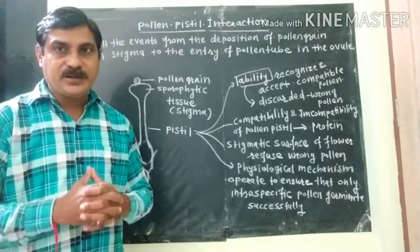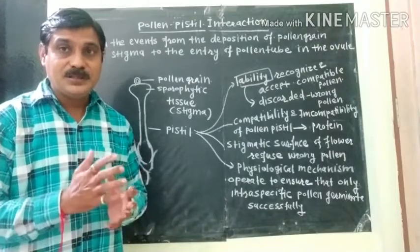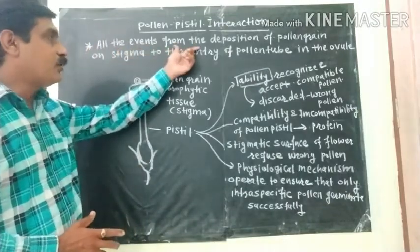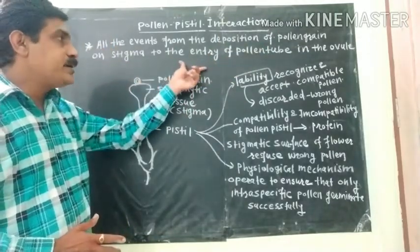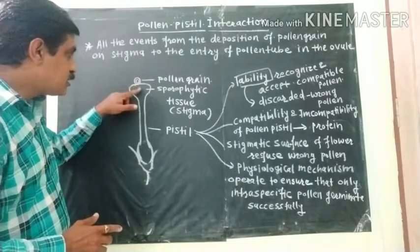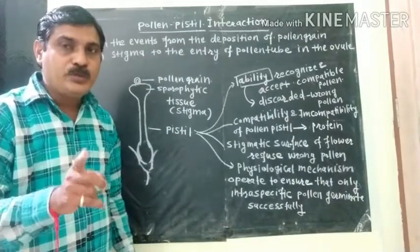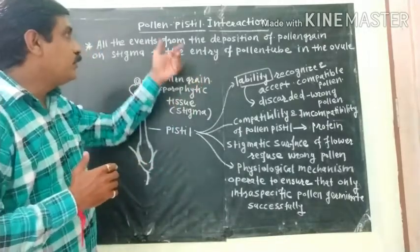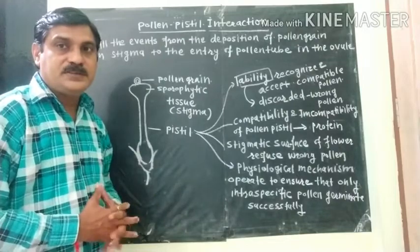This interaction begins with pollination and ends with fertilization. We can define pollen-pistil interaction as: all events from the deposition of pollen grain on the stigma to the entry of the pollen tube into the ovule. All these events are referred to as pollen-pistil interaction.